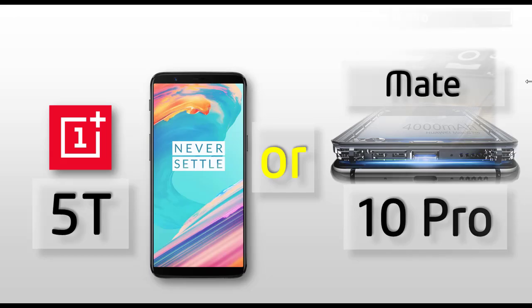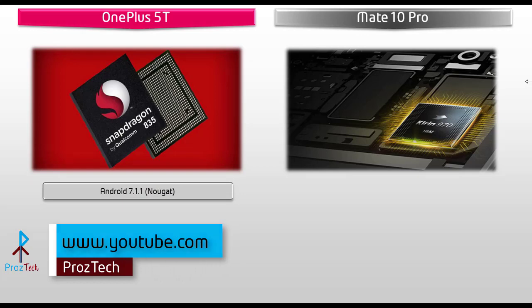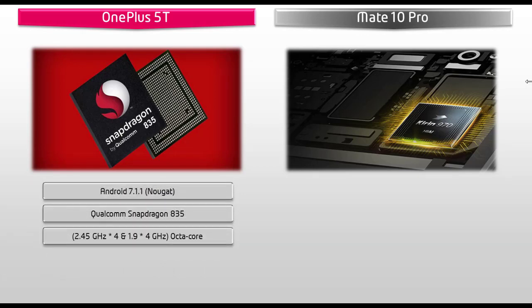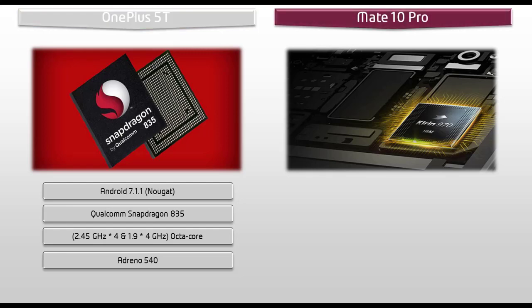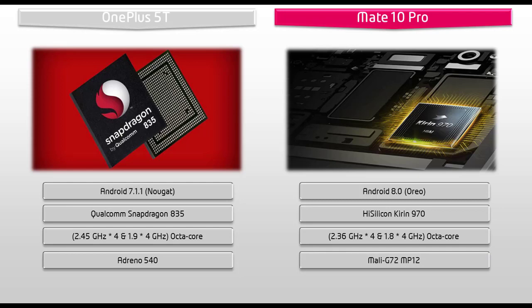So let's get started. Starting with the OnePlus 5T device, it works on Android 7.1.1 Nougat Oxygen OS and is powered by a 2.45 GHz octa-core with Qualcomm Snapdragon 835 and Adreno 540 GPU. OnePlus says that Oxygen OS is their operating system built on Android — it's smooth, it's minimalistic, it's refined. Whereas the Huawei Mate 10 Pro works on Android 8.0 and is equipped with a HiSilicon Kirin 970 processor with Neural Network Processing Unit and i7 co-processor, with 2.36 and 1.8 GHz octa-core and Mali G72 MP12 GPU.